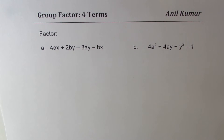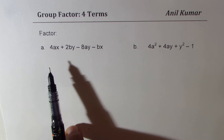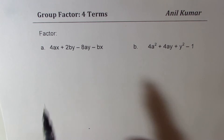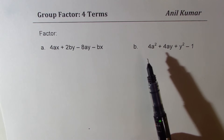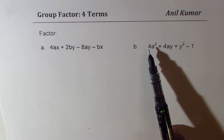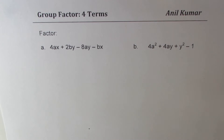I'm Anil Kumar, sharing with you two questions based on group factoring. We have four terms in each expression, and let us see how to factor them. The first one is 4ax plus 2by minus 8ay minus bx. The second one is 4a squared plus 4ay plus y squared minus 1.